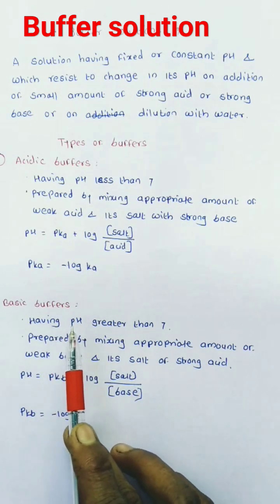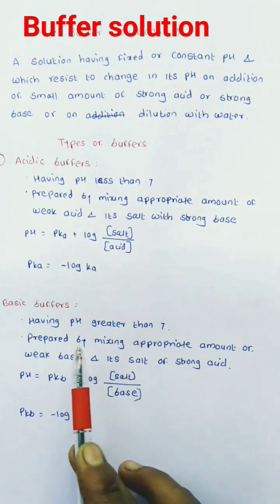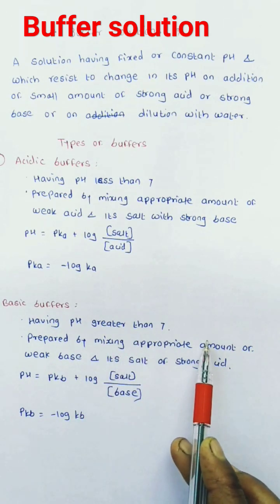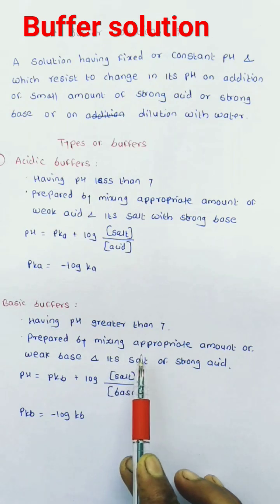Basic buffer: Having pH greater than 7. It is prepared by mixing appropriate amounts of weak base and its salt with strong acid.